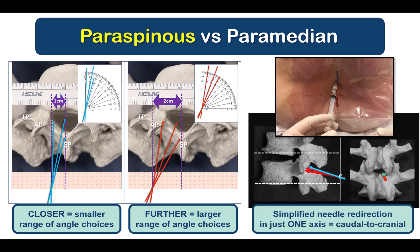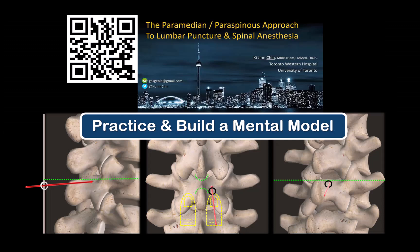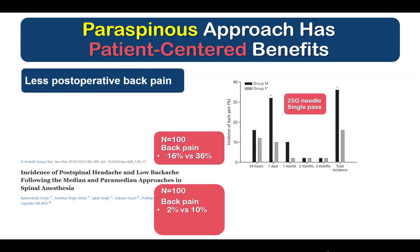In the latter instance, incremental cranial angulation will walk the needle tip off the superior edge of the lamina and into the ligamentum flavum, which again will be clearly signaled by its feel and the ability to advance the needle deeper. I've described the fundamental principles and execution of this technique in detail in a video available online. Like all skills, it does take a little bit of practice to master, mostly related to building the appropriate mental model, but I can guarantee you that it is worth the effort.